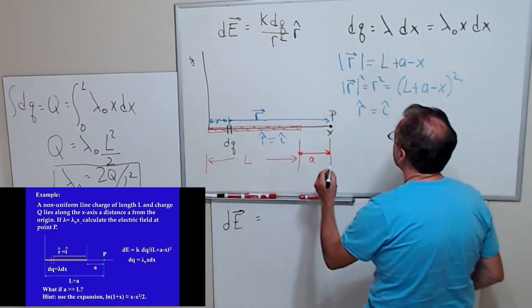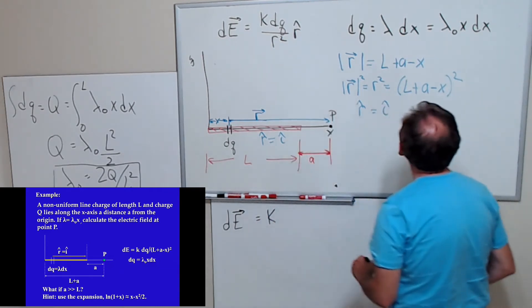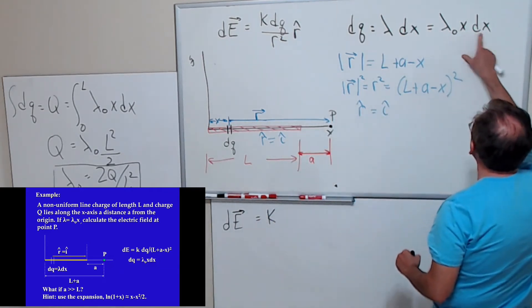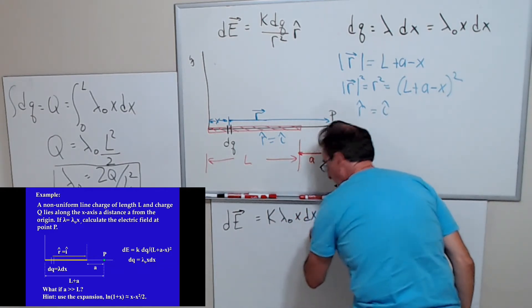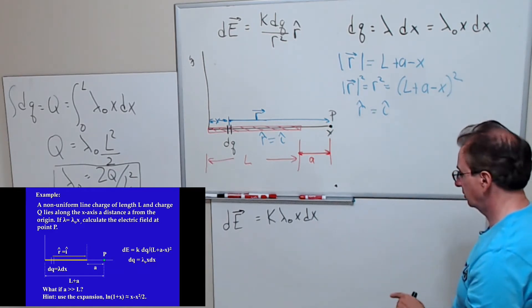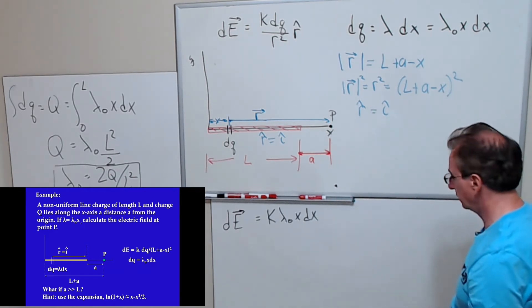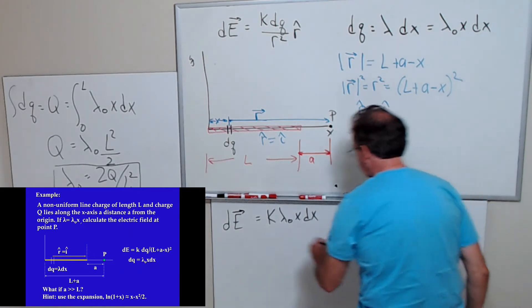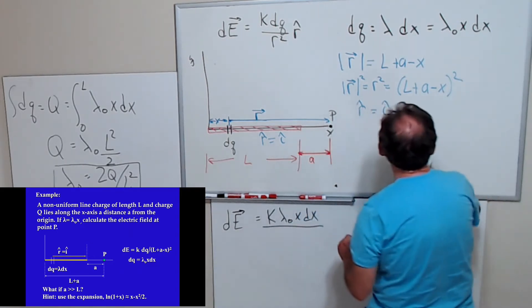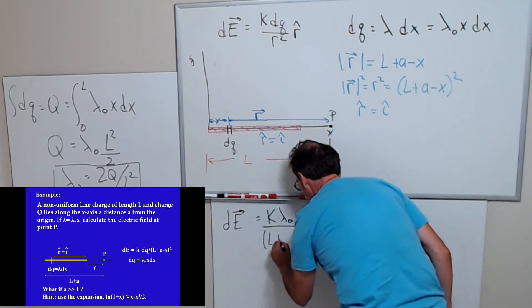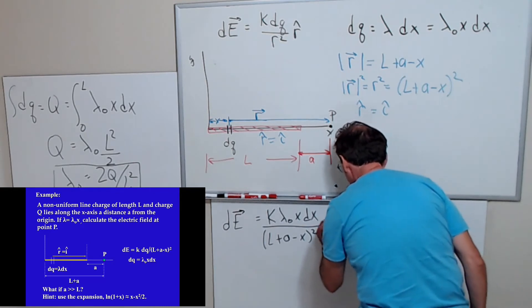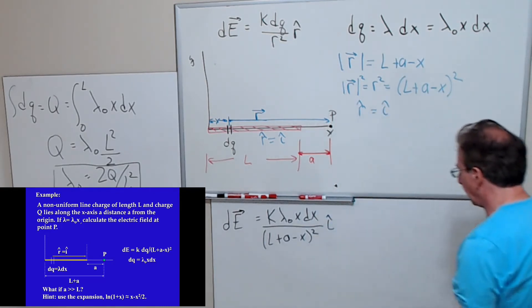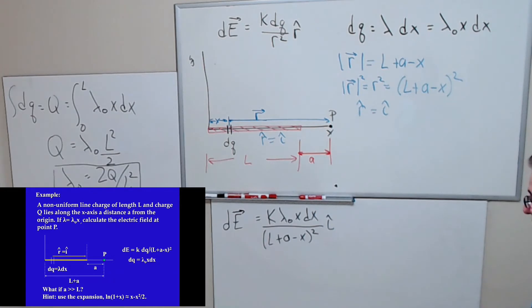So our dE is going to be k dQ. I'll just put lambda naught x dx. We can substitute lambda naught at the end. And then I'm going to divide by this term, and then I have an i hat there.